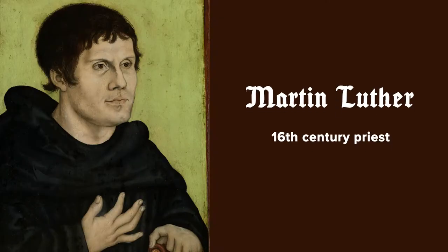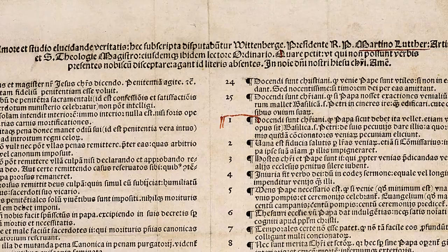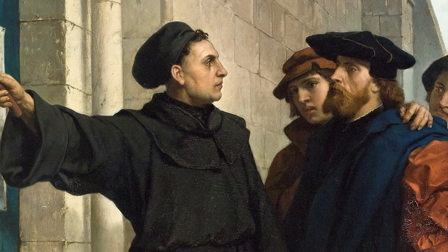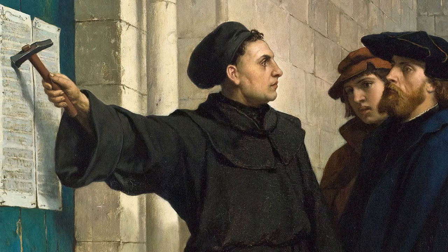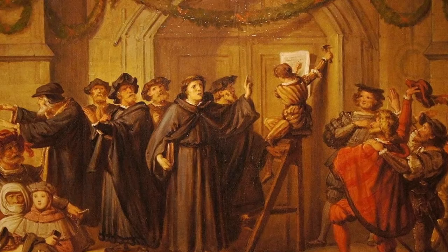A few decades after the invention of the printing press, a German priest and theologian named Martin Luther had grown critical of the power of the Catholic Church. In 1517, he wrote his 95 Theses, in which he criticized the church's selling of indulgences — essentially calling the church hierarchy corrupt. Using the new technology of the printing press, Luther's complaints were mass printed, and within a month thousands of copies had spread across Europe. Luther's printed criticisms were a kind of viral content that spread rapidly, replicated and spread by the printing press.